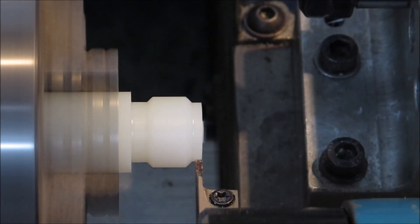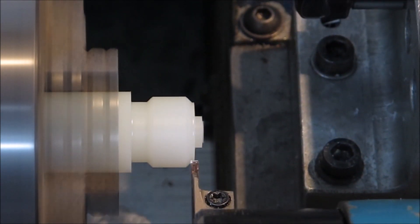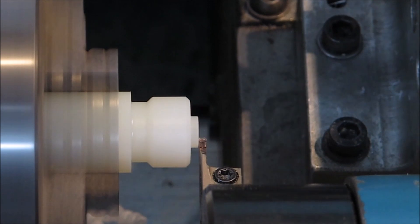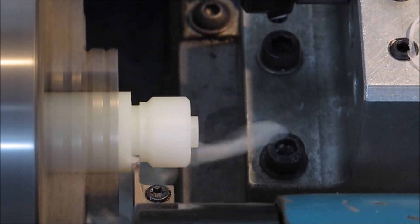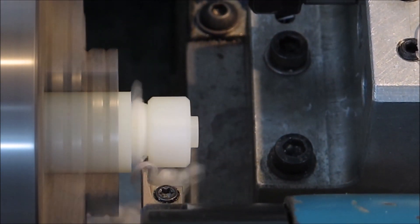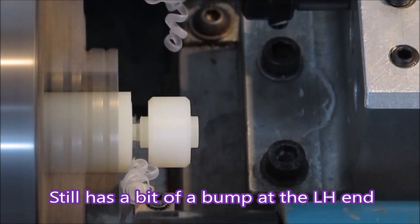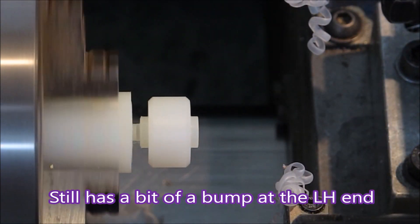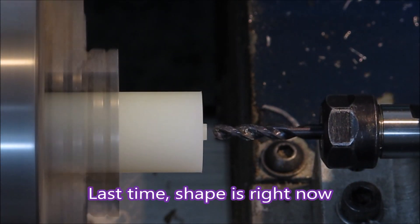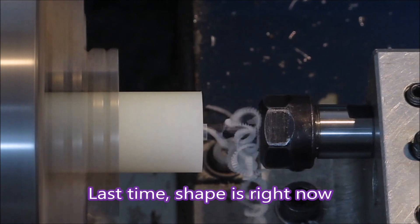There's just a programmed pause so we can get rid of any swarf that's become entangled in the job. When doing plastic I usually do that because it's just easier than waiting for it to make a mess and then you have to restart the program. So this time the shape's right.